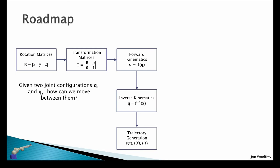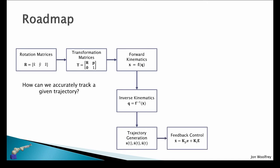Then we can solve inverse kinematics for two different poses of the robot, so the question becomes given two joint configurations Q1 and Q2, how can we move between them? Then after we've generated our trajectory, the question is how can we accurately track it?